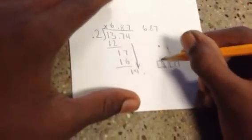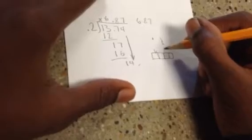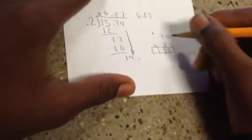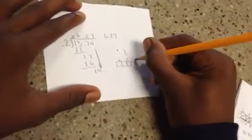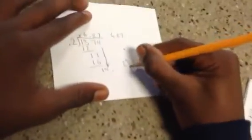So 6.87 hundredths and 2 tenths. How to do it times 2 tenths. Lattice method. It helps you.